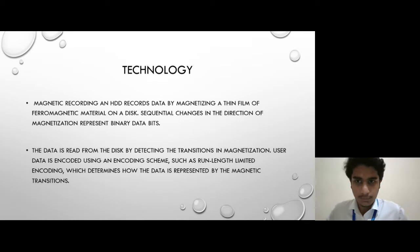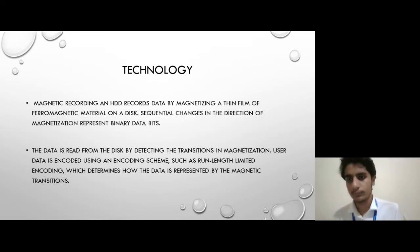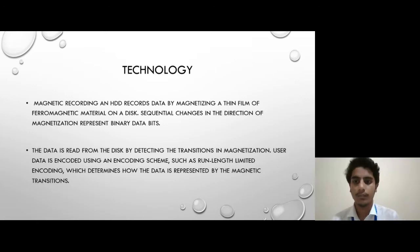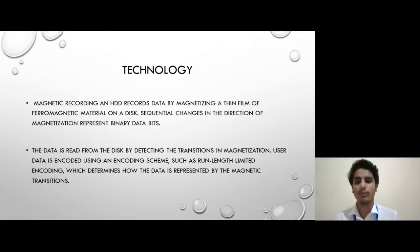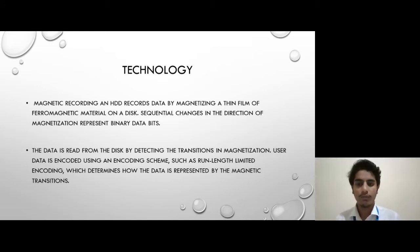Now we learn about the technique of how data is stored. A hard disk records data by magnetizing a thin film of ferromagnetic material. Sequential changes in the direction of magnetization represent binary data bits. The data is read from the disk by detecting the transitions in magnetization using an encoding scheme.